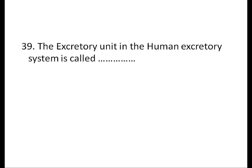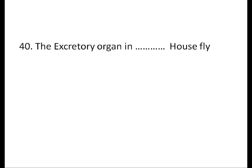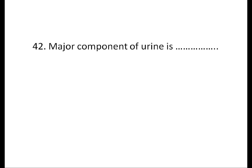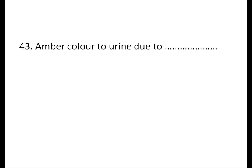The excretory unit in the human excretory system is called the nephron. The excretory organ in insects is the Malpighian tubules. The major component of urine is water. The amber color of urine is due to urochrome.